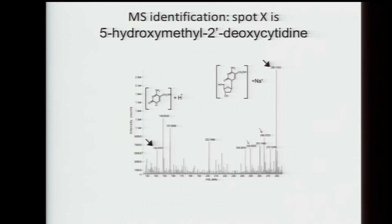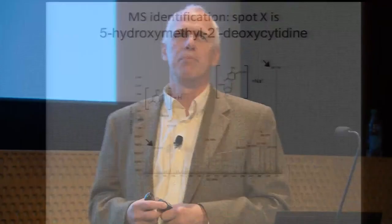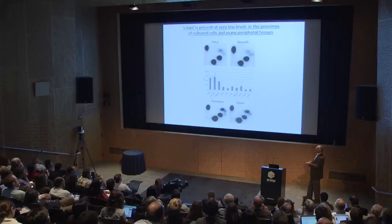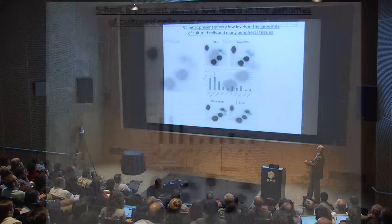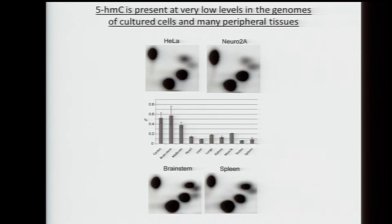After doing all the controls to rule out RNA contamination, the bottom line is that this unidentified spot is hydroxymethylcytosine. This wasn't a complete surprise because I studied bacteriophage in graduate school and knew they had modified nucleotides, but no one had ever seen this in mammalian genomes. When we looked at different cell types — cultured cell types, HeLa cells, neuron cultures, peripheral tissues — there really isn't very much of this. It's highly enriched in neurons, and I don't know why.